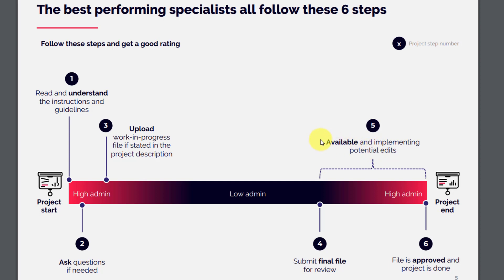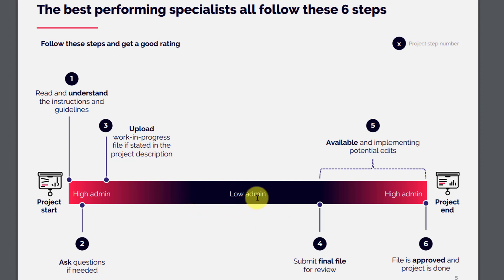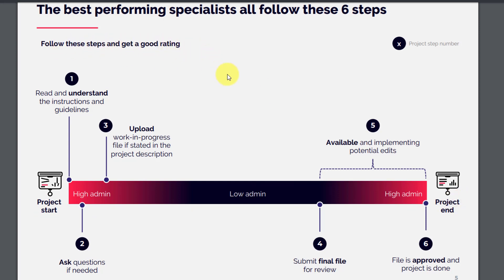Step five: once you've submitted the final file, be available and implement potential edits. Feedback from the admin may require you to modify or fix parts of the presentation. Step six: the file is approved and the project is complete. Notably, between steps three and four there is low admin interaction — you work on your own — but at the start and end there is high admin activity. Follow these steps to get good ratings.